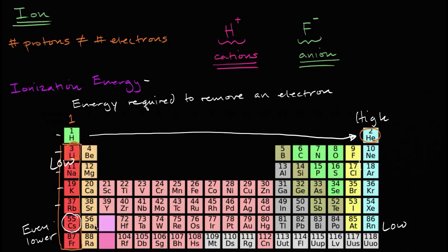The general trend is that if we go from the bottom left to the top right, we go from low ionization energy — very easy to remove an electron — to high ionization energy, where it's very hard to remove an electron.